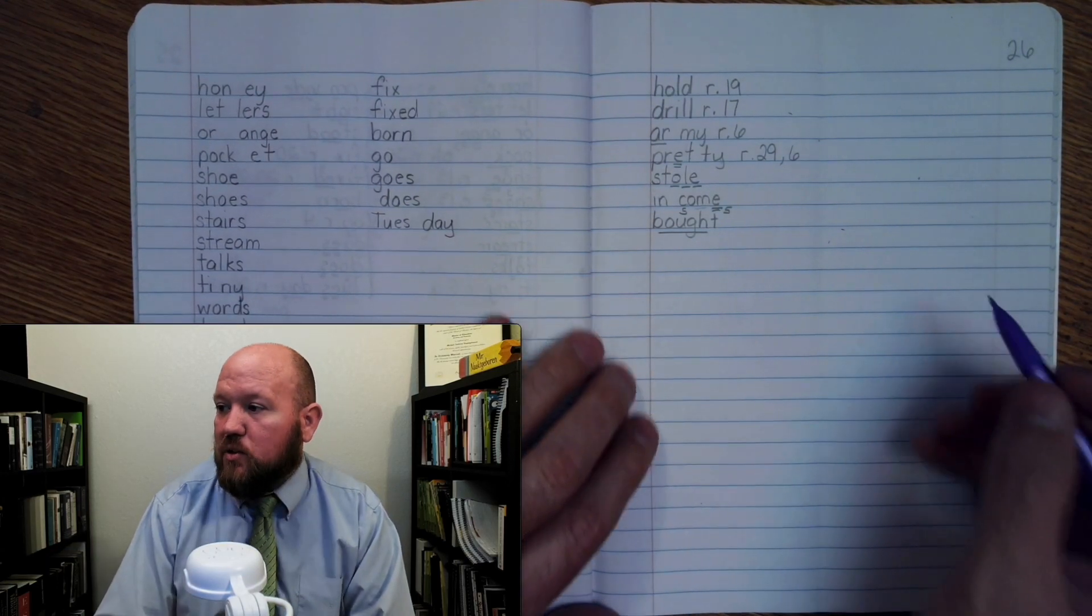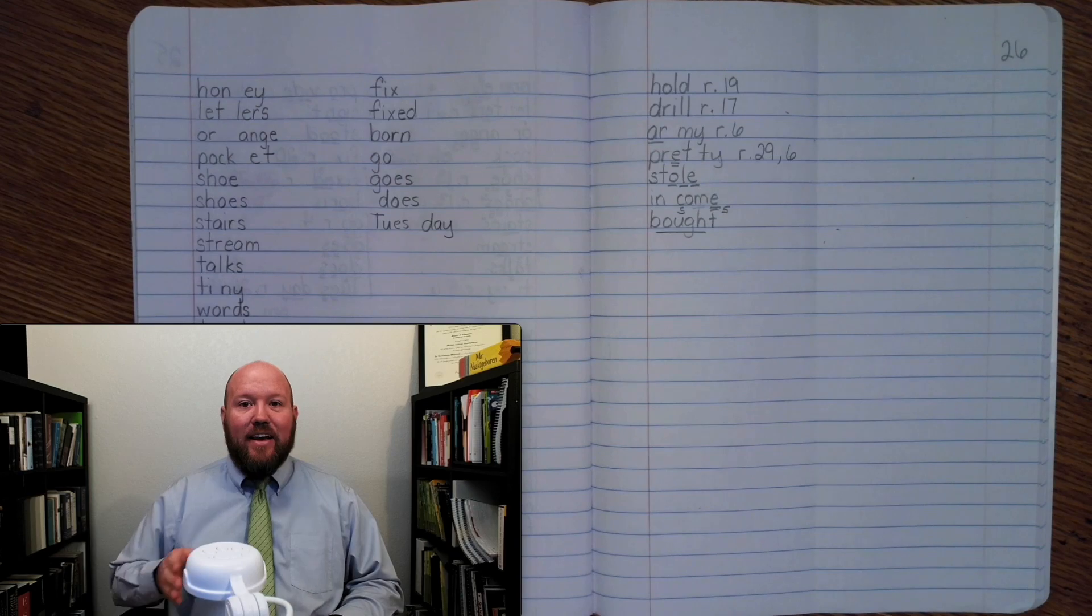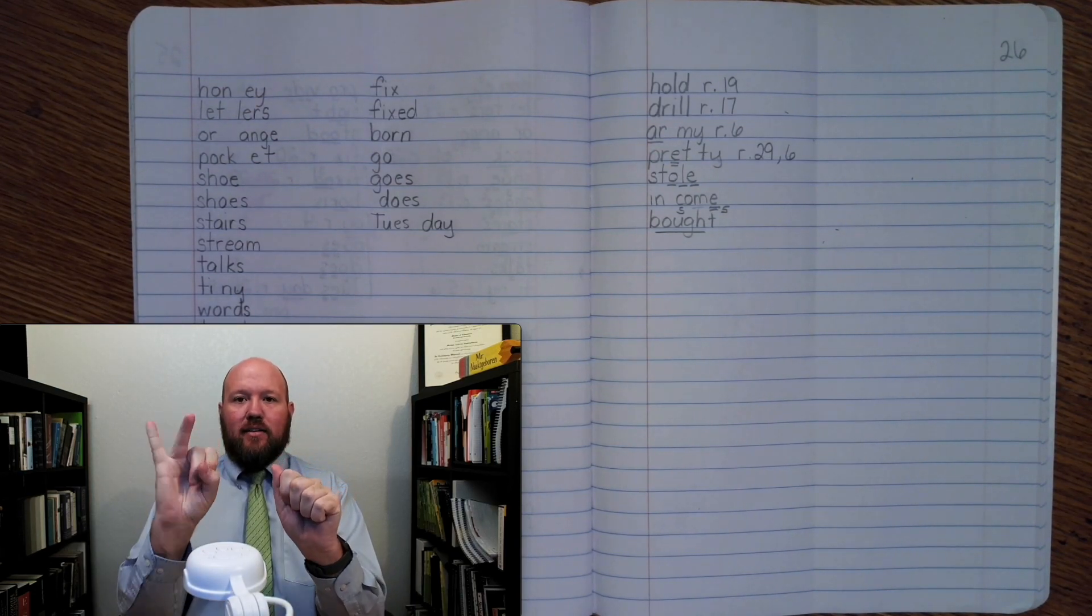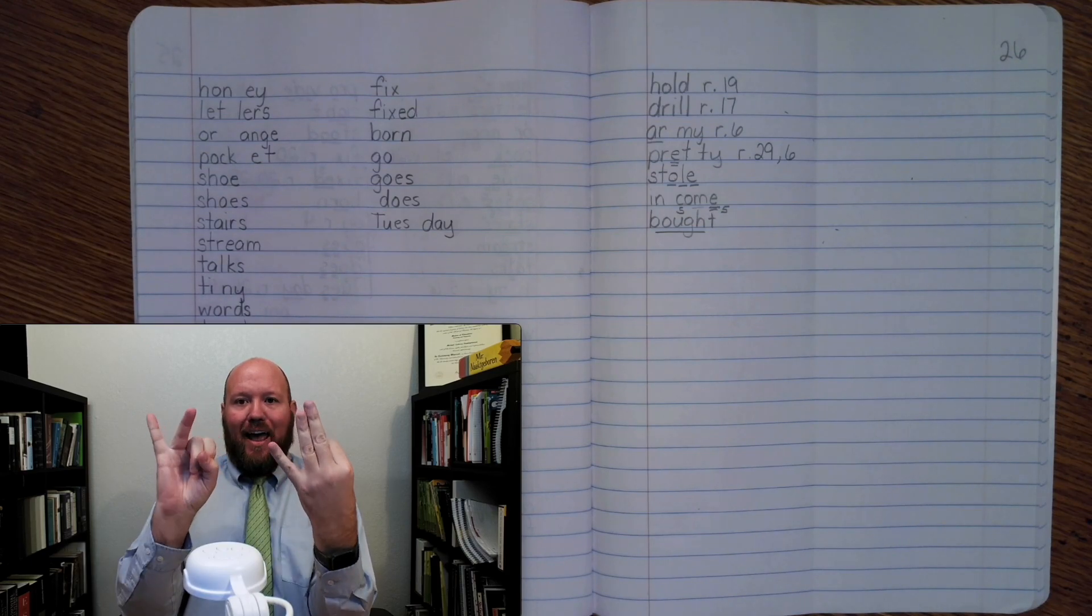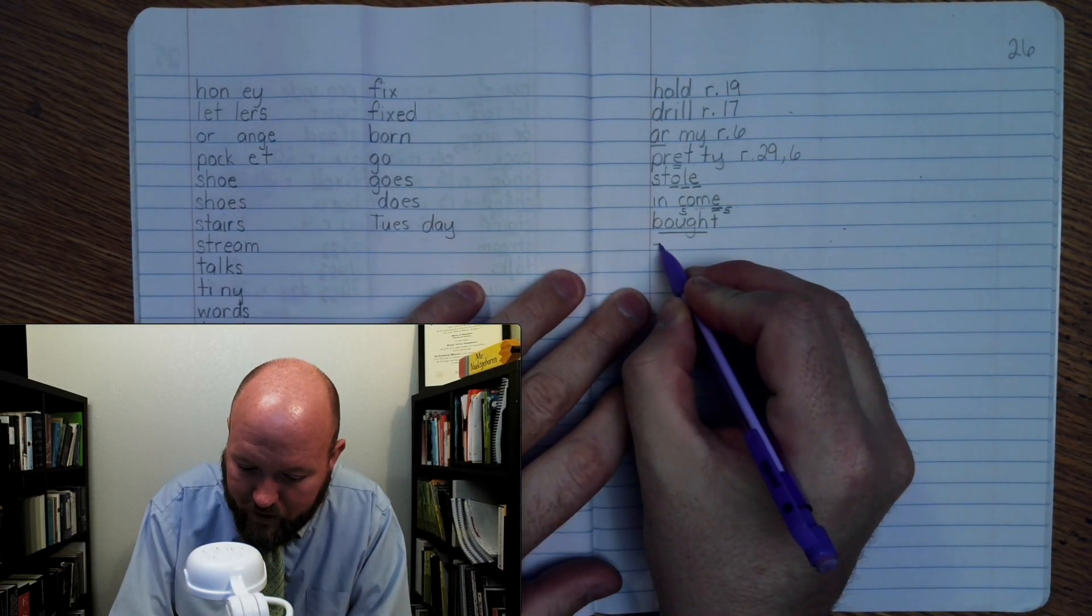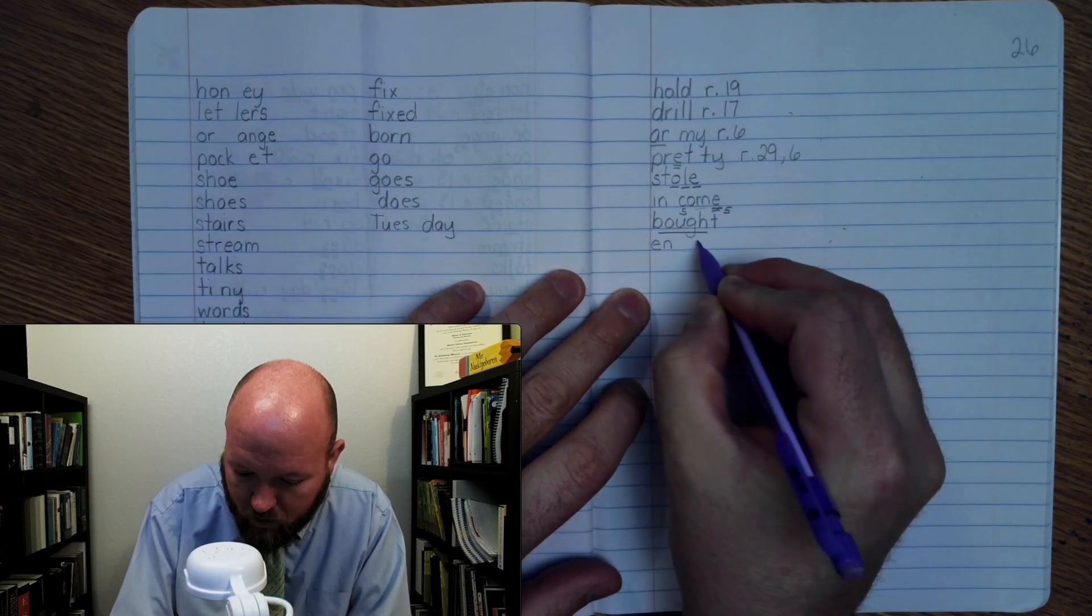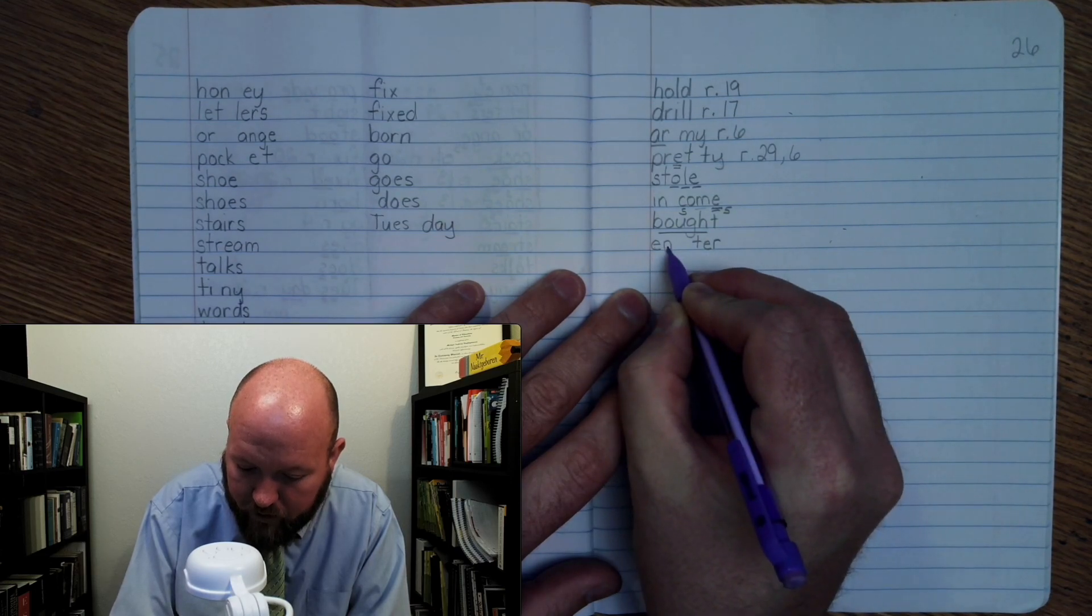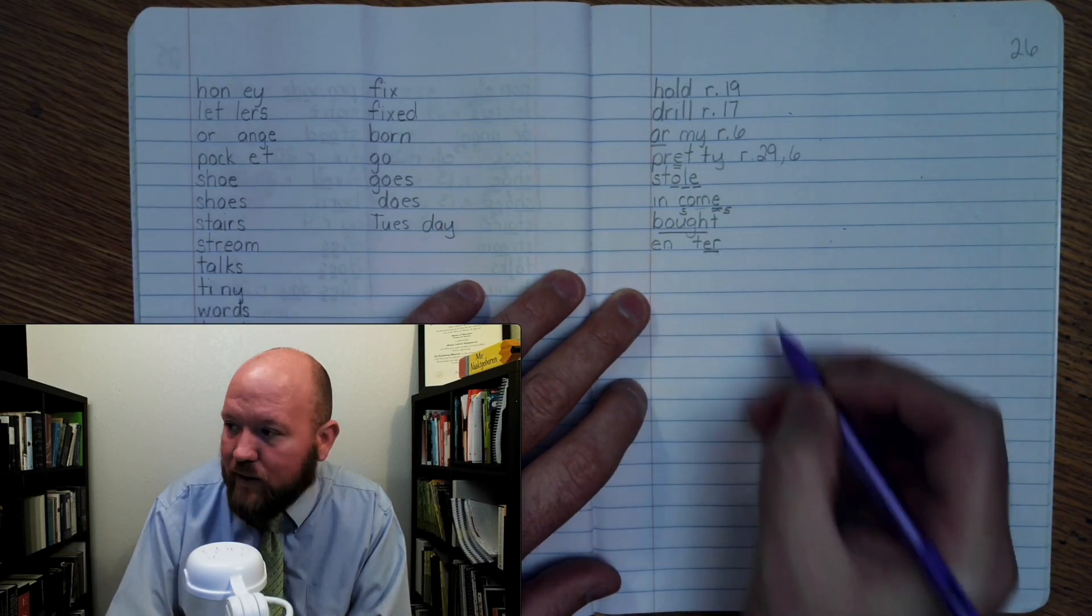The next word is enter, like 'enter the door.' Base word enter: E-N-T-E-R. En-ter. The E-R makes the 'er' sound of 'her.' Write it: E-N-T-E-R. For markings: E-N once, T-E-R once. Enter.